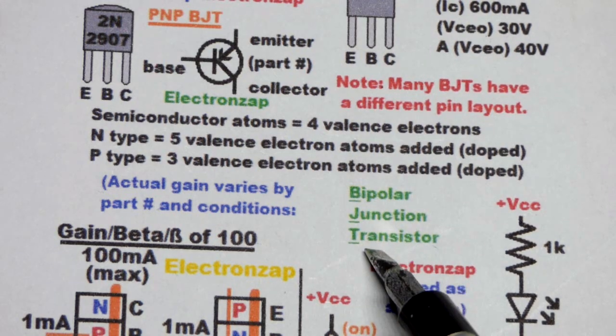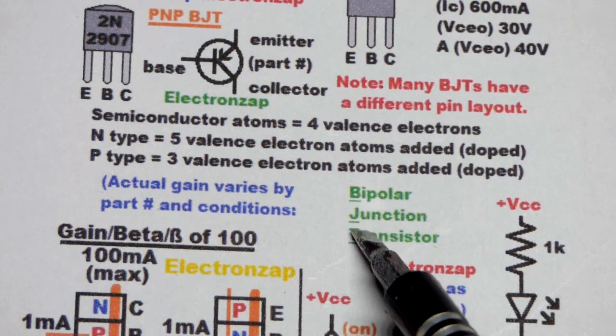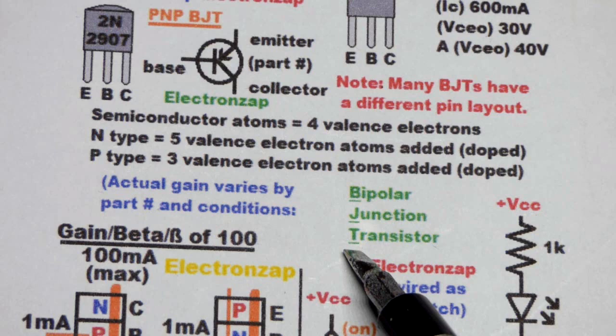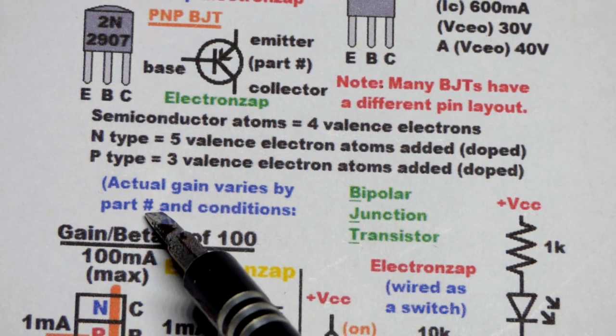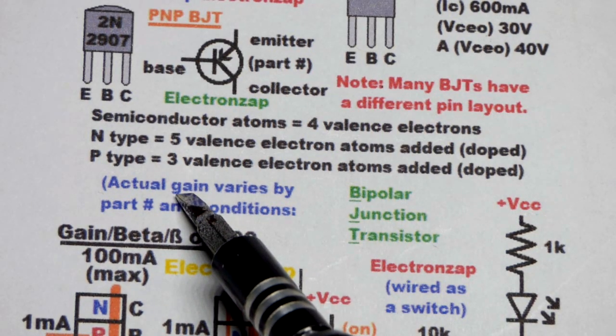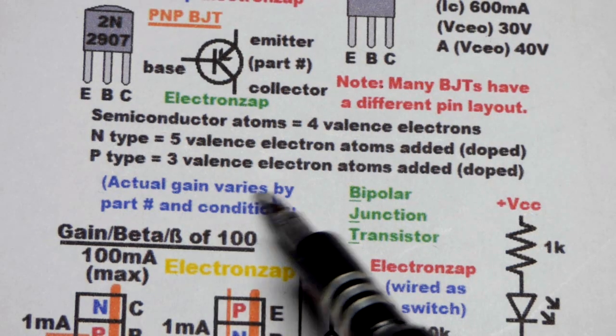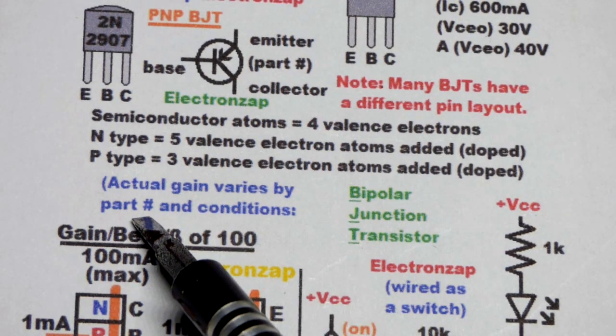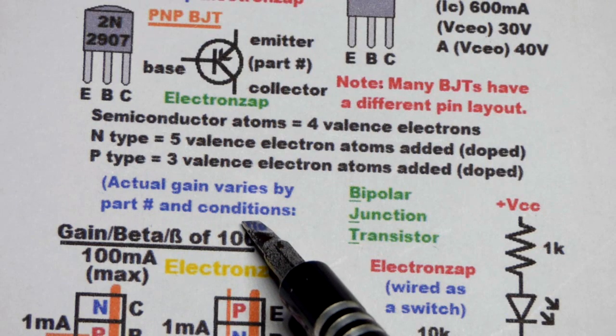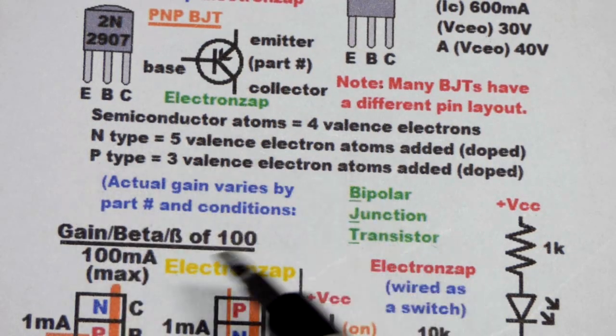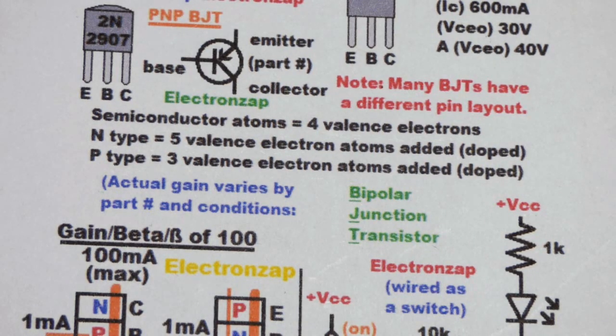Bipolar junction transistor is usually abbreviated as BJT, especially in writing. And so again, the actual gain that a particular transistor has varies both by what transistor it is and also the conditions that you are using it. So you have to look at the data sheet or test it out yourself to know for sure.